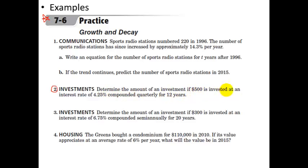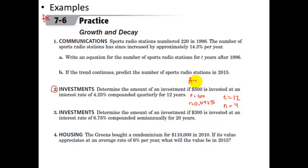Let's look at problem number two: determine the amount of an investment if $500 is invested at an interest rate of 4.25% compounded quarterly for 12 years. Writing down our variables: the principal P is 500; the interest rate r is 4.25%, or 0.0425 as a decimal; t is 12 years; and n is 4 because quarterly means four times per year. Now we write the equation: A equals P times one plus r over n, raised to the power n times t.